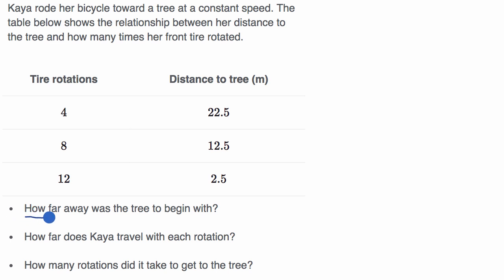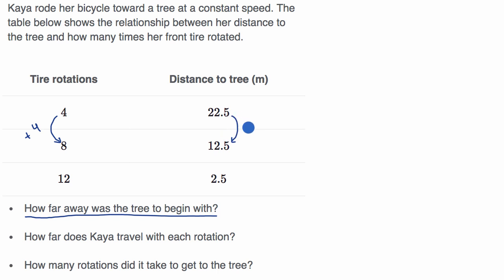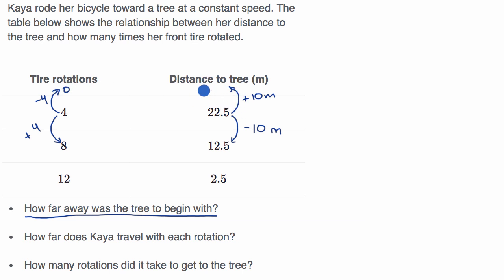Let's start with the first question: how far away was the tree to begin with? After four rotations, we're 22 and a half meters from the tree. If we increase by another four rotations, we've gotten 10 meters closer — distance went down by 10 meters. To get back to zero rotations, we subtract four rotations, and since we're going at a constant rate, we add 10 meters back. So at zero rotations, the distance would be 32.5 meters. That's how far the tree was to begin with.